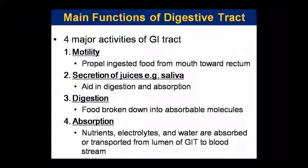The main functions of this digestive tract are four major activities of the GIT wall: motility, secretion, digestion, and absorption. Motility refers to movement of food. Secretion includes secretion of juices like saliva. Digestion is the breaking down of food. And absorption is the uptake of nutrients.